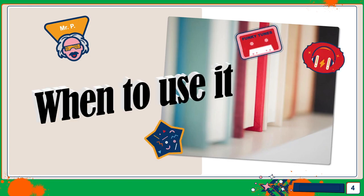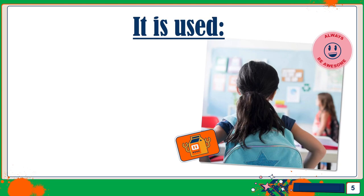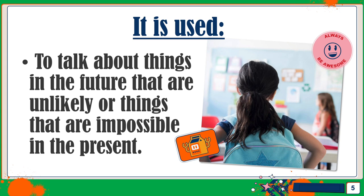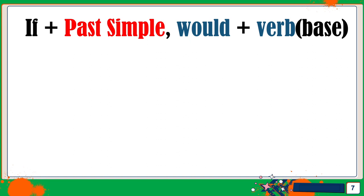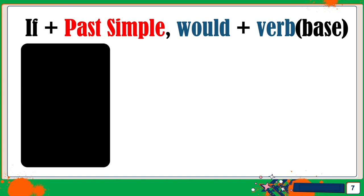So now we're going to take a look at when to use it. We use the second conditional to talk about things in the future that are unlikely, or things that are impossible in the present. So how is it formed? We have the following formula: IF — that is a conjunction — plus the past simple, then comma, WOULD, plus the base of the verb. Now let's take a look at some examples.